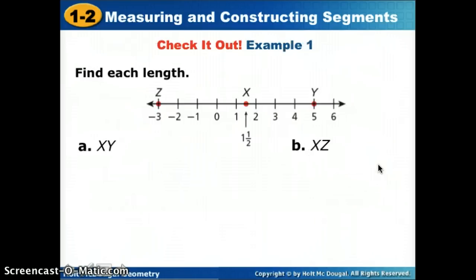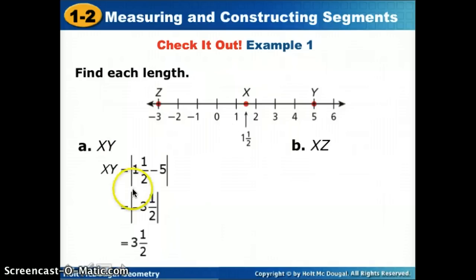Here's one more. This one does have half marks. So from X to Y, we could start at X, which is at 1 and 1 half, and count how many spaces we move to Y. I moved 1, 2, 3 and 1 half. It also works with our absolute value. If I started at 1 and 1 half and I subtract 5, I get negative 3 and 1 half. Take the absolute value. The length from X to Y is 3 and 1 half.